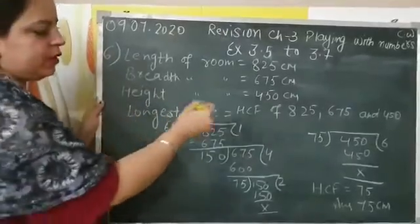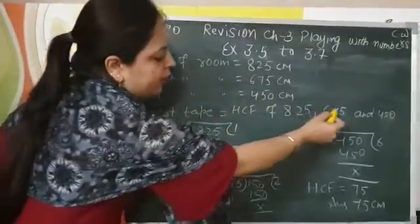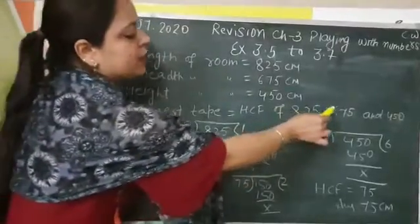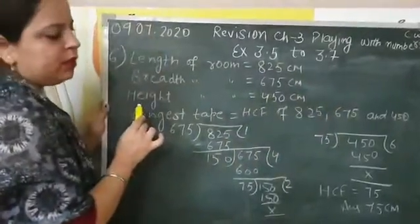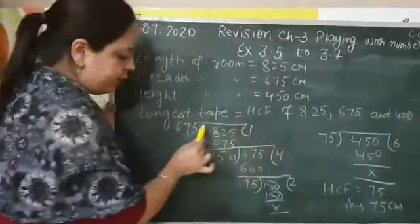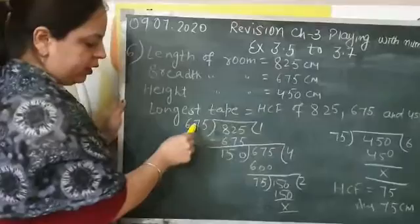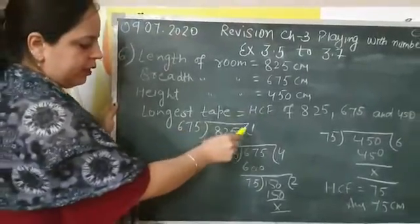How we will use the division method? See, we have these three numbers. First of all, take the first two largest numbers which is 825 and 675. When you will start division, you will divide 825 by 675 at 1.